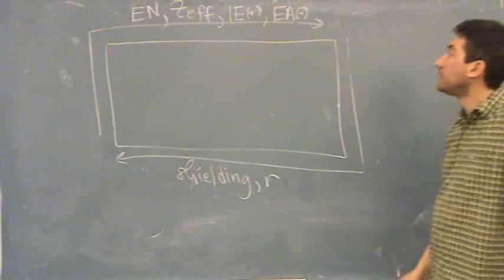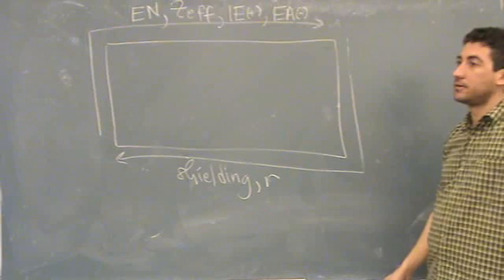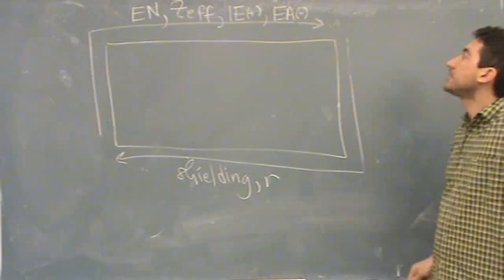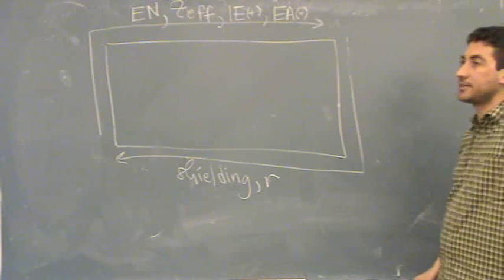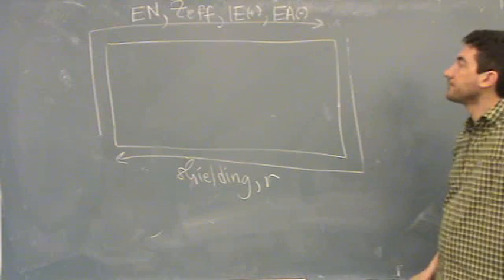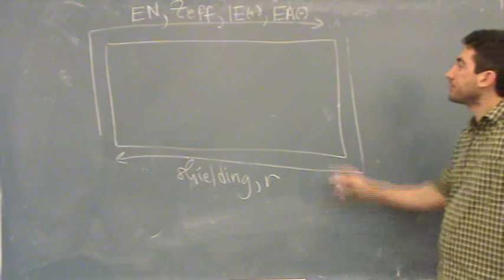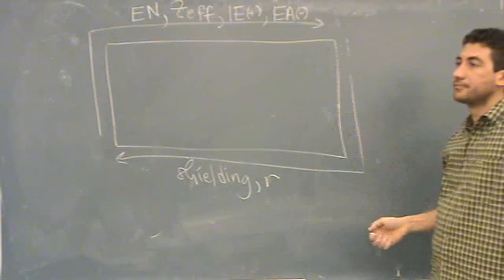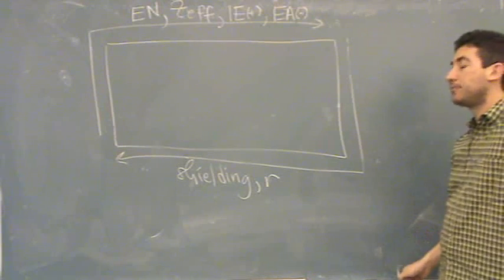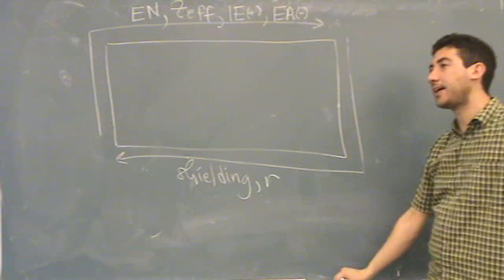Student asks: Does electron affinity mean like the ability for the atom to gain electrons? Teacher: Yes. Electron affinity is the ability to gain electrons. Student: So the ones in the top right corner are more likely to become ionic? Teacher: Yes. Negatively ionic, will more likely to become negatively ionic.